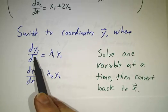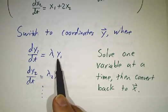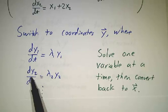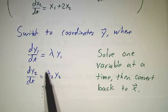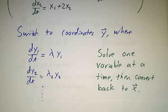You wind up with a differential equation for y1 that only depends on y1, a differential equation for y2 that only depends on y2. You can solve these one at a time, and then when you're done, you convert everything back to the x coordinates and you're done.